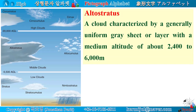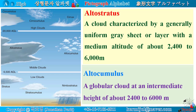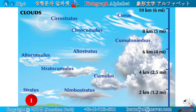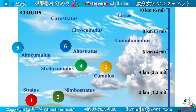Altostratus: a cloud characterized by a generally uniform gray sheet or layer with a medium altitude of about 2,400 to 6,000 meters. Altocumulus: a globular cloud at an intermediate height of about 2,400 to 6,000 meters. Clouds chart — number one: stratus; two: nimbostratus; three: cumulus; four: stratocumulus; five: altocumulus; six: altostratus; seven: cumulonimbus; eight: cirrocumulus; nine: cirrostratus; ten: cirrus.